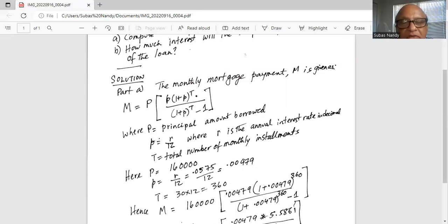Small p is equal to R divided by 12. Now, R is 0.0575 divided by 12, which is 0.00479.